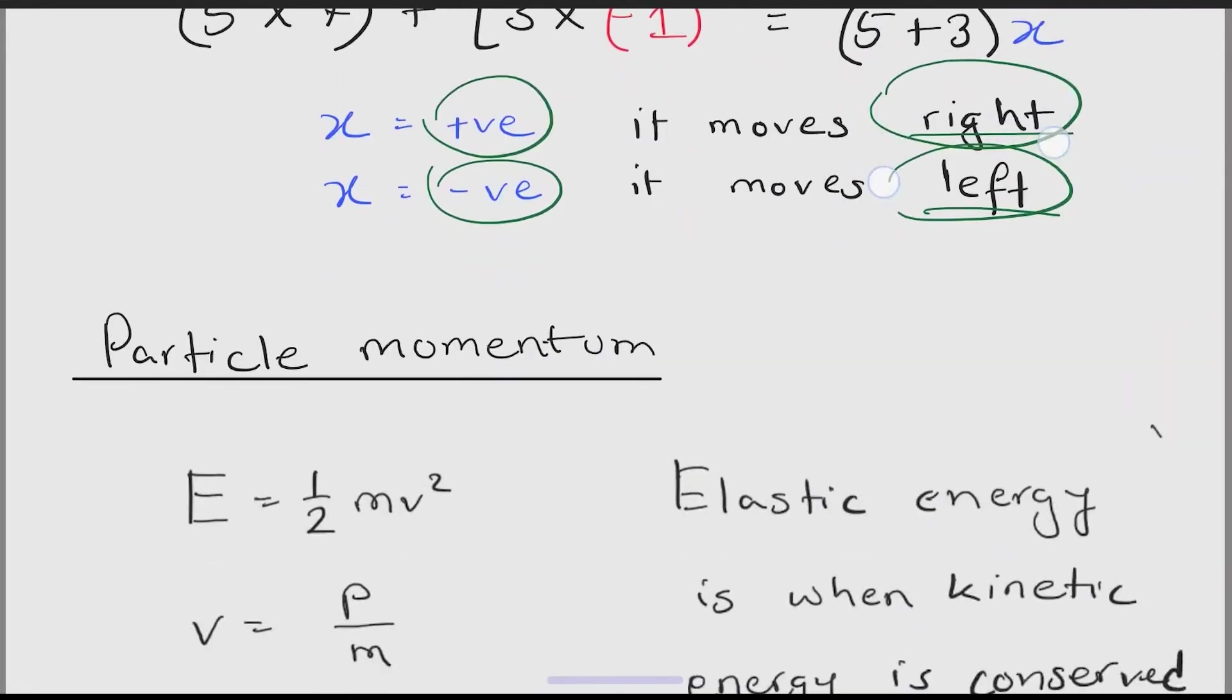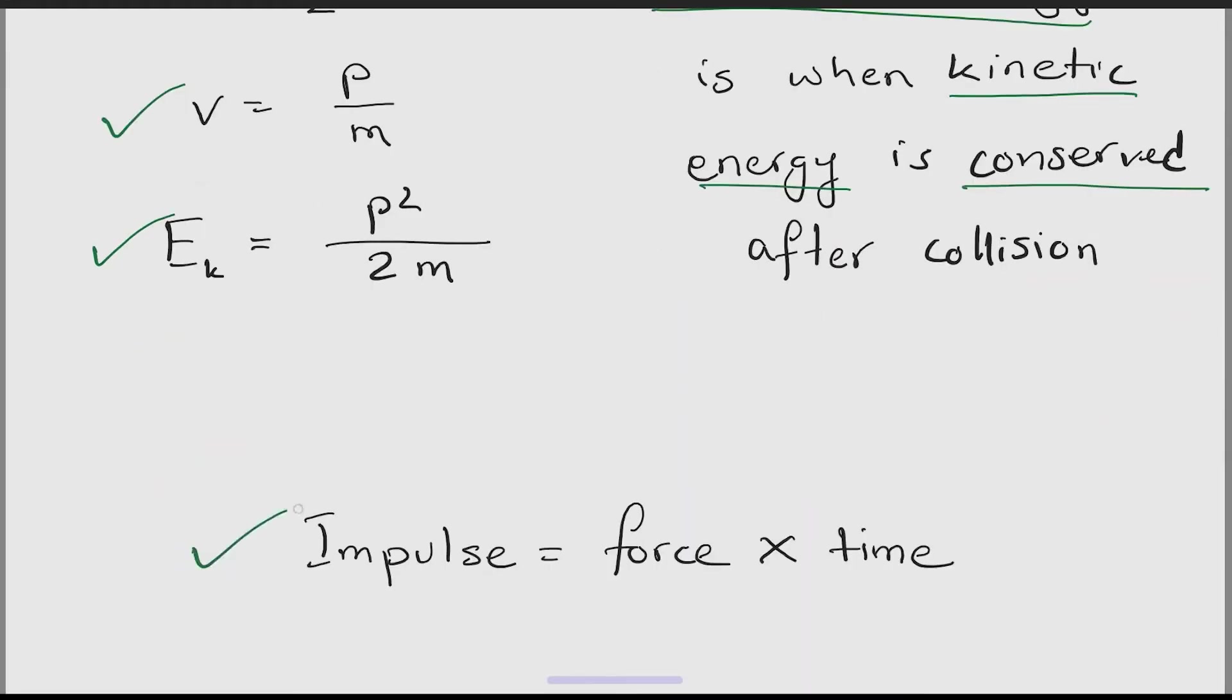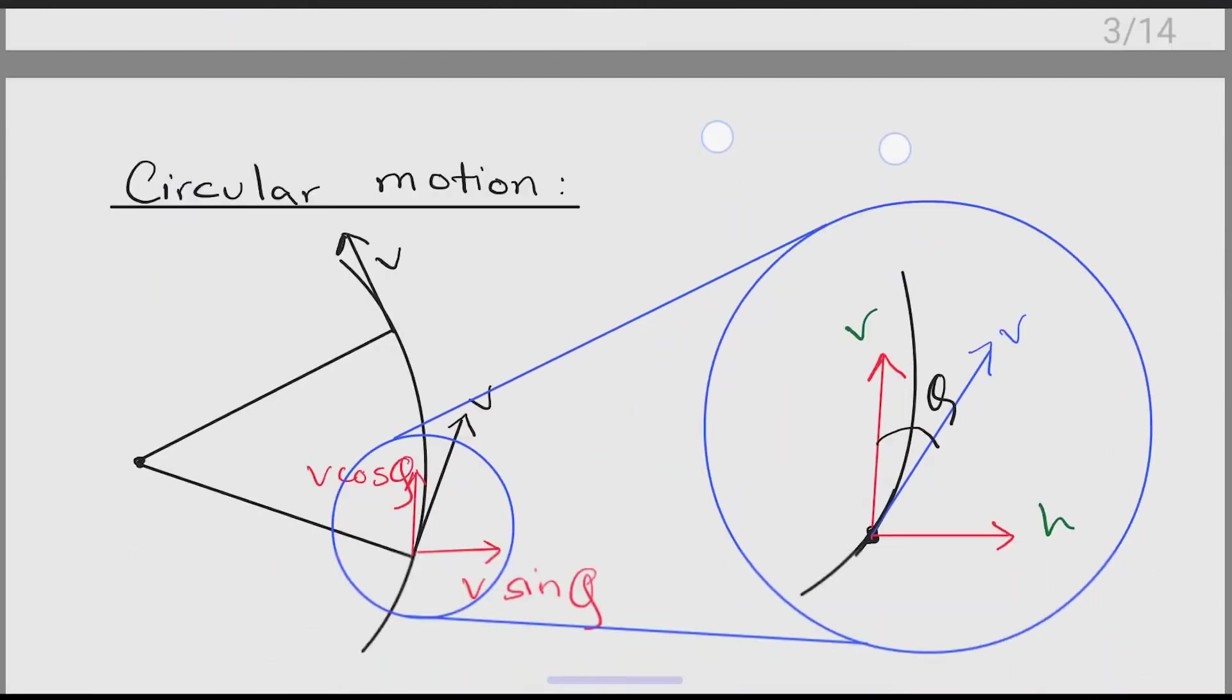Let's move on to particle momentum. Here are a few formulas that will help you. E equals half mv square, V equals p by m, kinetic energy equals p square by 2m. Also remember elastic collision is when the kinetic energy is conserved after collision. If by any chance the kinetic energy is not conserved it is an inelastic collision. Impulse equals force into time.